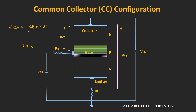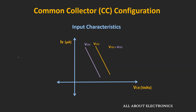For a fixed value of Vcb, as we increase the voltage Vce — or in other words, as we increase Vbe — the base current Ib will increase. This is because as Vbe increases, more and more electrons are pushed by the emitter terminal, causing the base current Ib to increase. Therefore, for a larger value of Vce, the entire input characteristic curve will get shifted to the right-hand side.